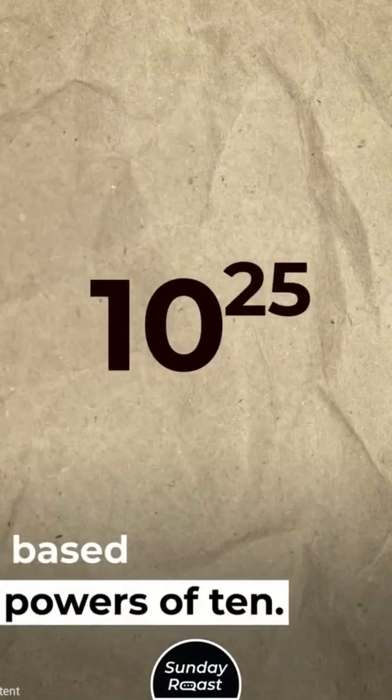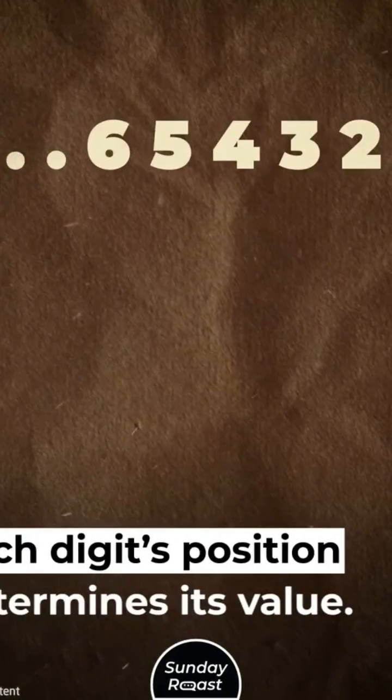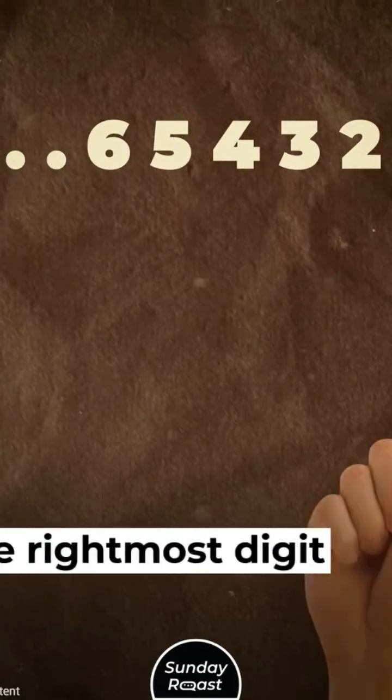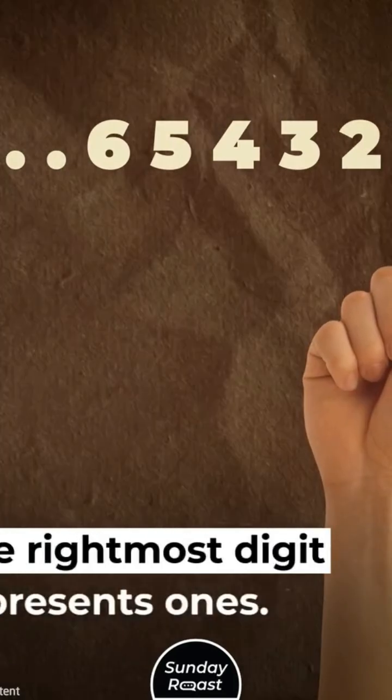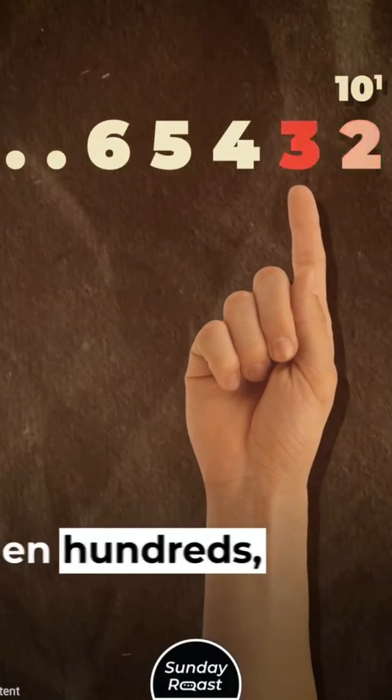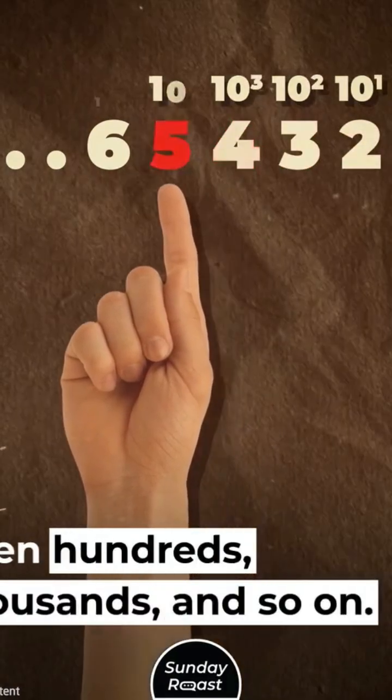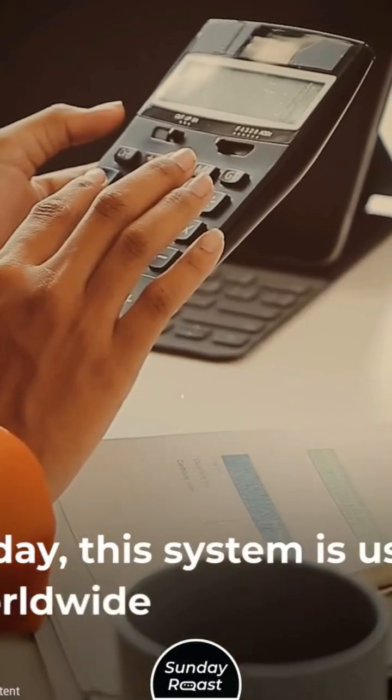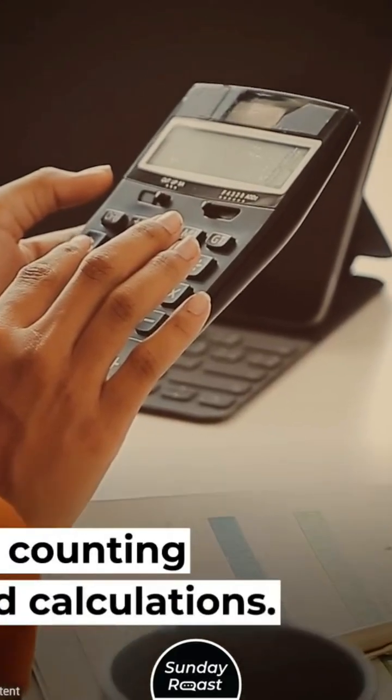Each digit's position determines its value. The right-most digit represents ones. The next represents tens. Then hundreds, thousands, and so on. Today this system is used worldwide for counting and calculations.